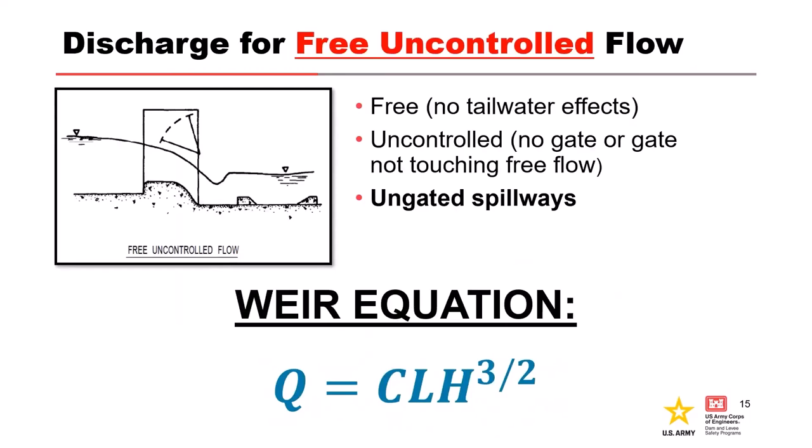Discharge estimates for free uncontrolled flow can be approximated using the weir equation. Q has units of cubic feet per second, the net effective spillway length L has units of feet, and the energy head H has units of feet. The discharge coefficient C is a function of the gravitational constant and therefore is not dimensionless — its value depends on what unit system you're working in. The discharge coefficient is determined empirically because measuring energy loss through a structure is difficult, and that's what the coefficient helps accomplish.